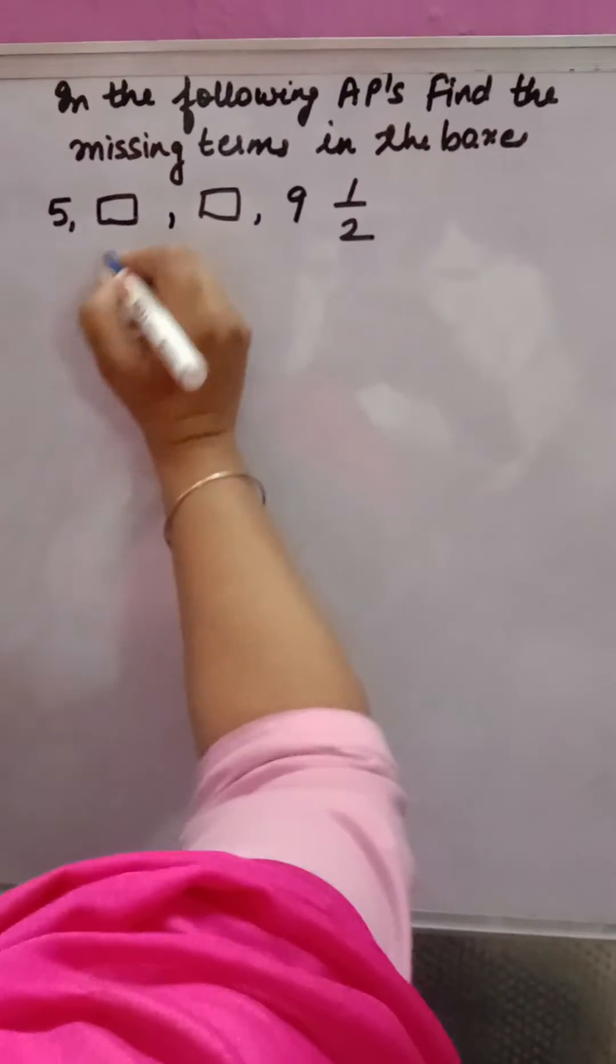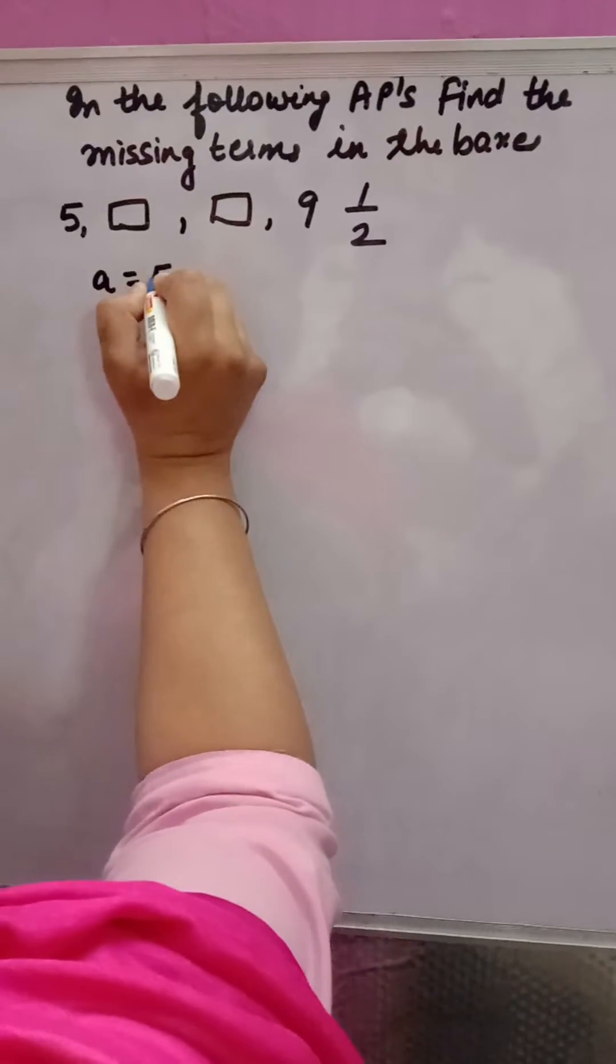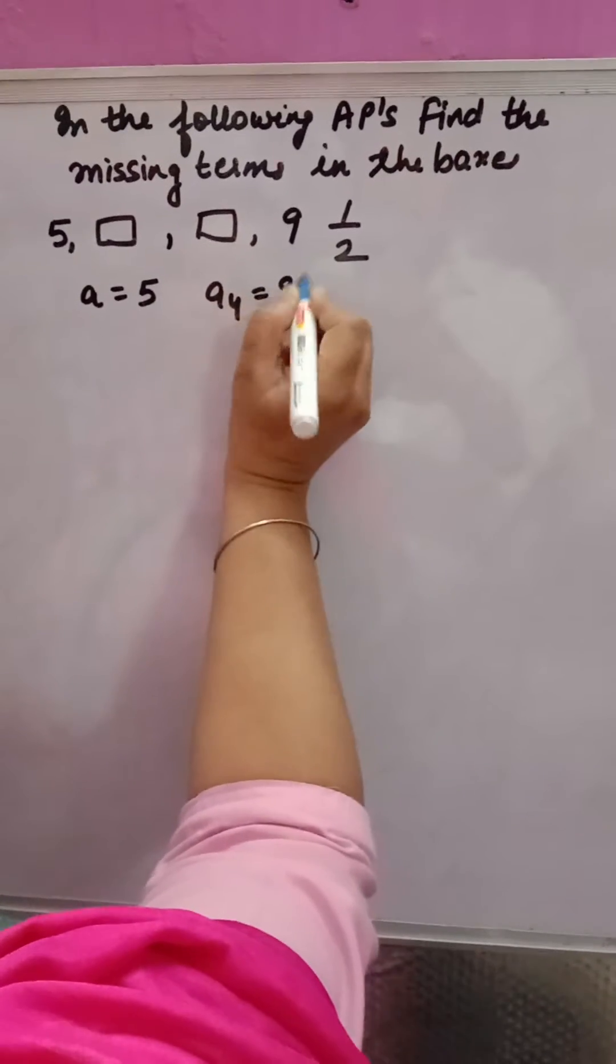Find the missing terms in the boxes. The first term is 5, so a is 5, and a₄ is given as 9½.